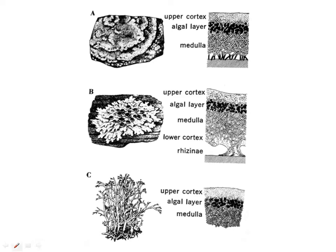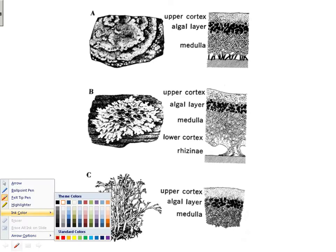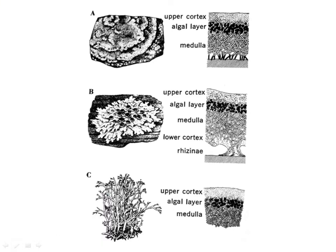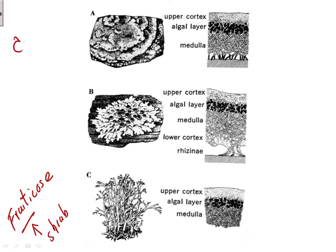The third type is the fruticose lichen. Fruticose means shrub, so it's a shrub-like, three-dimensional lichen. So we have the three types: crustose, foliose, and fruticose — three-dimensional lichens.